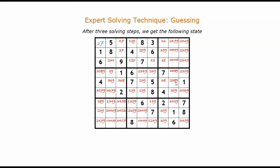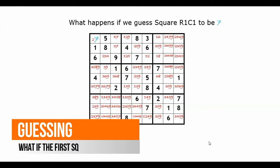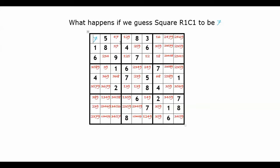How about we guess the first square to be 7? What happens if we guess it to be 7? We remove 7 from its row, from its column, from its box. Now we have two more squares that can be finalized to a number.